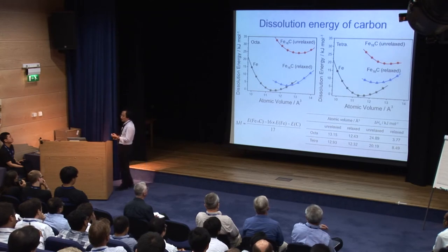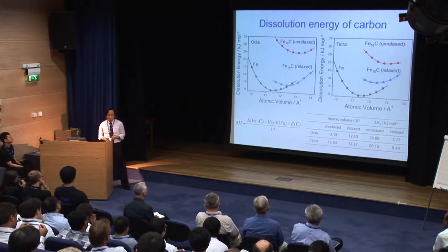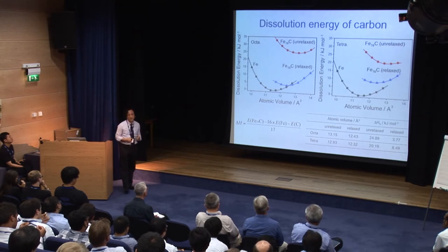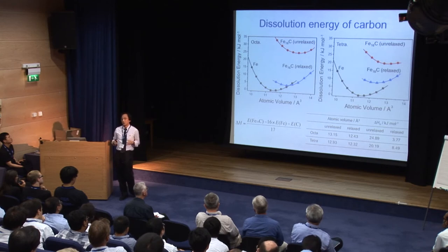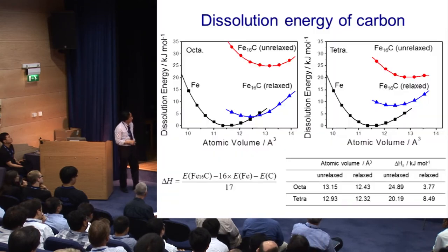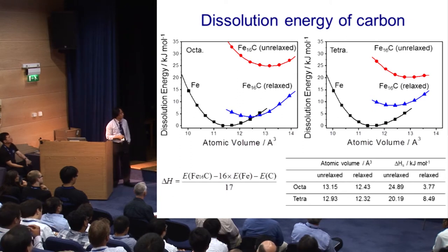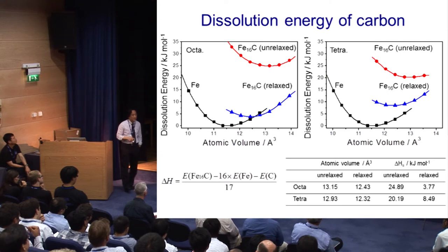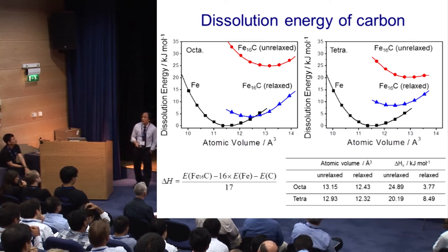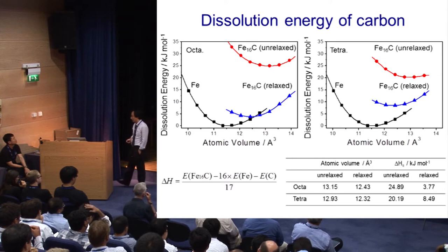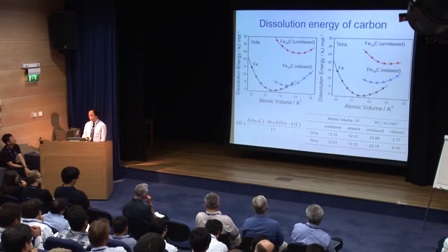With relaxation, carbon in the octahedral site pushes iron atoms in two main directions, while carbon in the tetrahedral site pushes iron atoms in four directions. Due to this difference, in the relaxed condition the dissolution energy of carbon in the octahedral site is lower than in the tetrahedral site, confirming that the octahedral site is the preferred interstitial site for carbon, as we know.